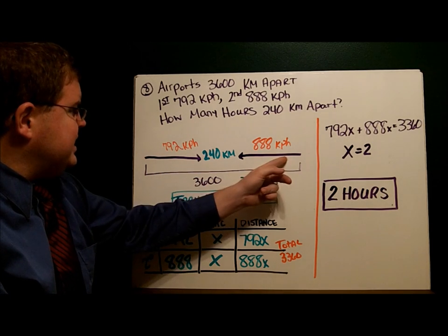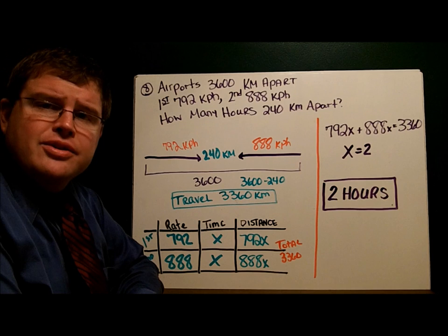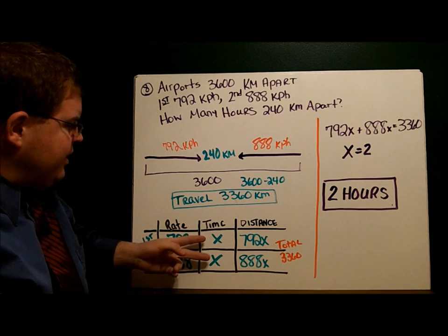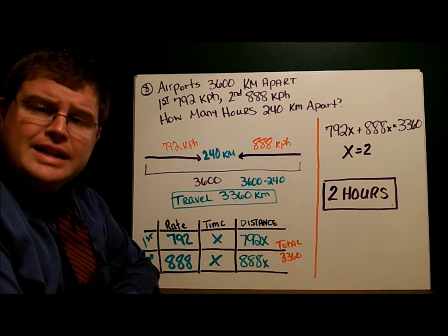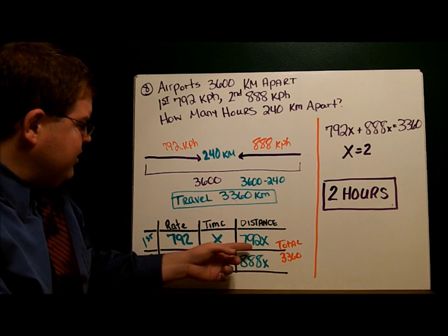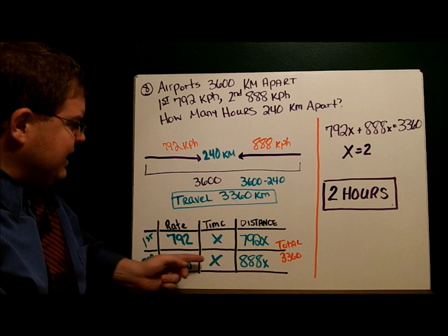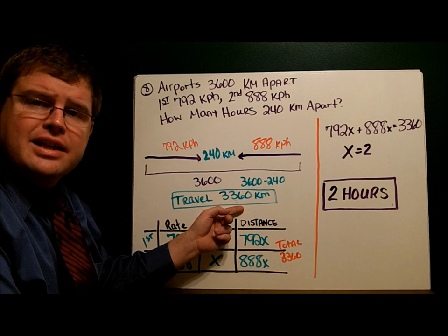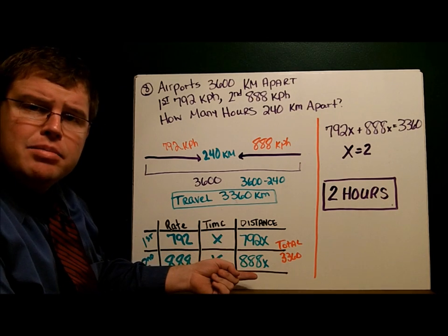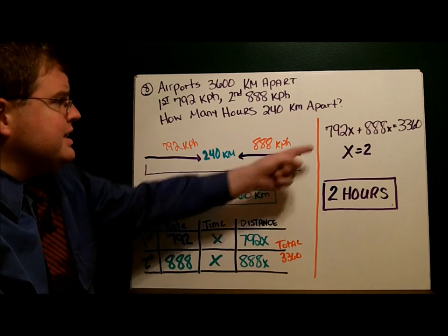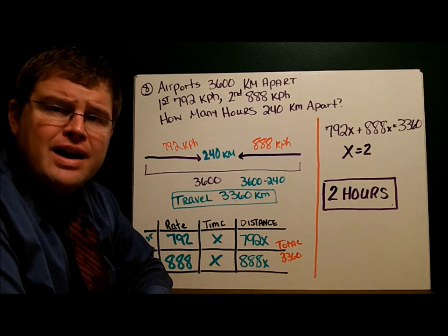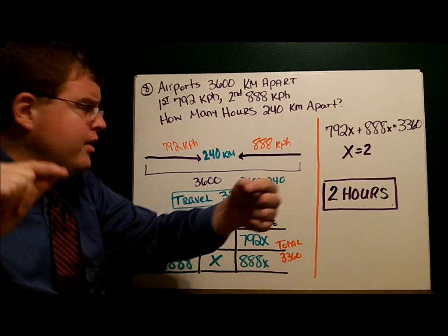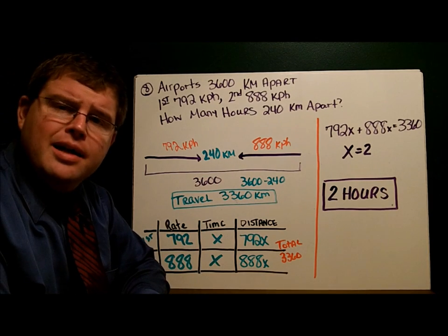This distance plus this distance equals 3,360. The rates were given to me. The amount of time is what I'm trying to find, so we'll call both of those X, and we multiply rate times time to get distance. They traveled a total of 3,360 kilometers, so this distance plus this distance equals 3,360. That gives me my equation: 792X + 888X = 3,360, and I find X equals 2. It took a total of 2 hours for the planes flying toward each other to still be 240 kilometers apart.